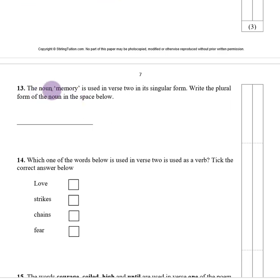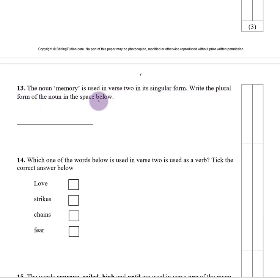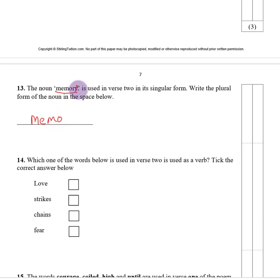Number thirteen. The noun 'memory' is used in verse two in its singular form. Write the plural. The plural of memory is memories — one memory, two memories. This is spelt by dropping the Y and adding IES: memories.